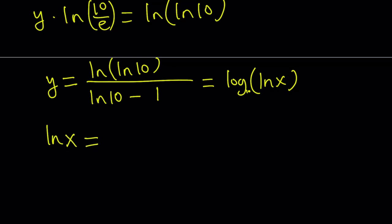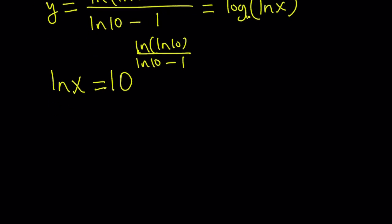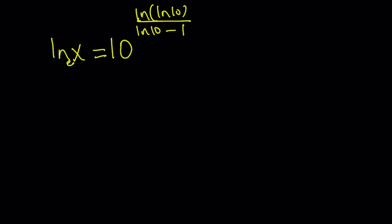ln x equals, and I probably need a little bit more room to be able to write that gigantic exponent. So ln x equals 10 to the power ln ln 10 divided by ln 10 minus 1. That expression on the left hand side. Great. So we got ln x, but we want to get x. So why don't we do e to the power both sides? And that's going to give us the value of x. Because the base is e. If you use the definition, you're going to get e to the power 10 to the power something for x. So x equals e to the power 10 to the power ln ln 10 divided by ln 10 minus 1.